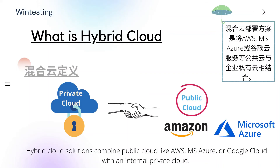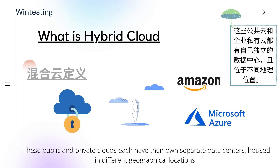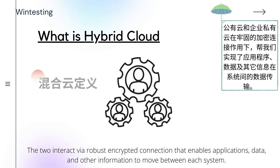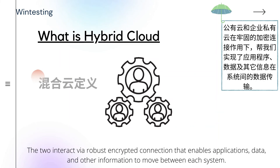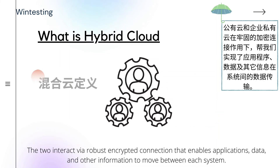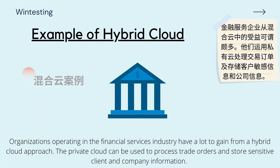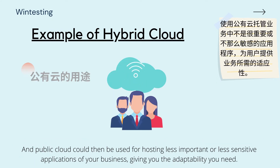What is hybrid cloud? A hybrid cloud solution combines a public cloud like AWS, Microsoft Azure, or Google Cloud with an internal private cloud. These public and private clouds each have their own separate data centers housed in different geographical locations. They interact via a robust encrypted connection that enables applications, data, and other information to move between each system. Organizations in the financial services industry have a lot to gain from a hybrid cloud approach: the private cloud can be used to process trade orders and store sensitive client and company information, while the public cloud can host less sensitive applications, giving you the adaptability you need.